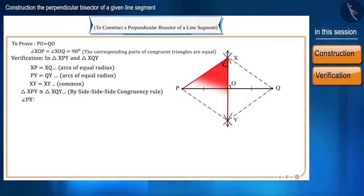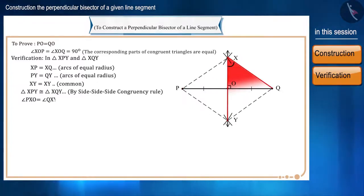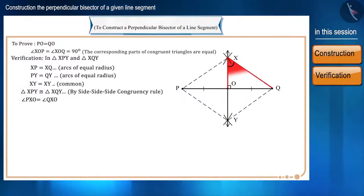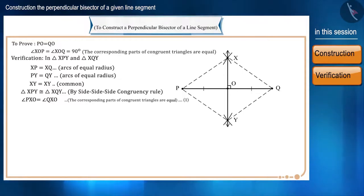Therefore, angle PXY equals angle QXY — or equivalently, angle PXO equals angle QXO — because the corresponding parts of congruent triangles are equal. Let this be equation 1.